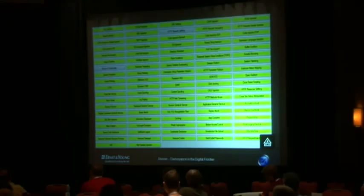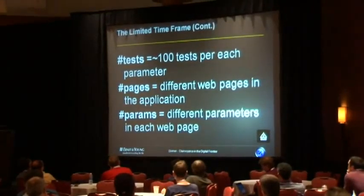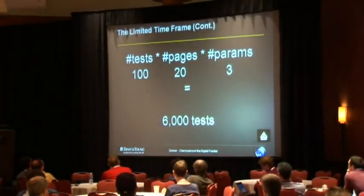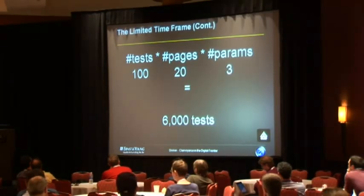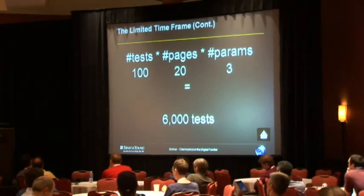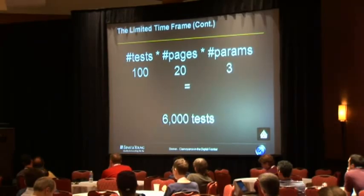Let's do the math. If we're testing a small-sized application — say around 20 pages — and each page has about three parameters on average, it means we have to perform at least 100 tests per parameter per attack type. Just on the basis of three parameters across 20 pages, that adds up to 6,000 tests.